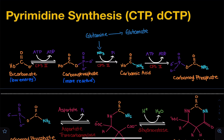Previously, when we talked about pyrimidine synthesis, we learned that the first nitrogenous base that is synthesized is uracil. So once uracil is generated through the de novo pathway that we discussed in the previous video, we can utilize that uracil-containing nucleotide to generate nucleotides that contain cytosine and thiamine.